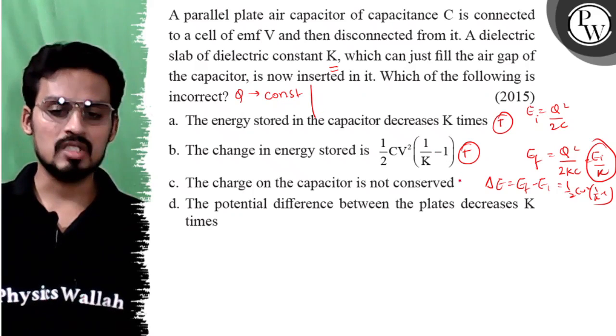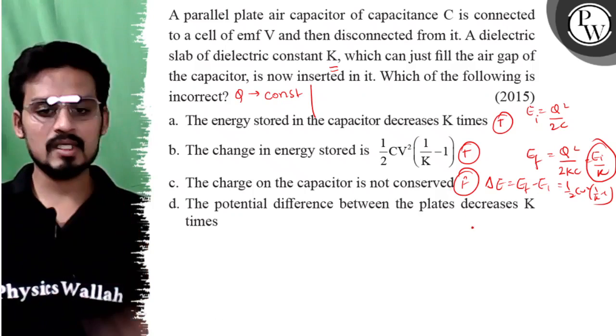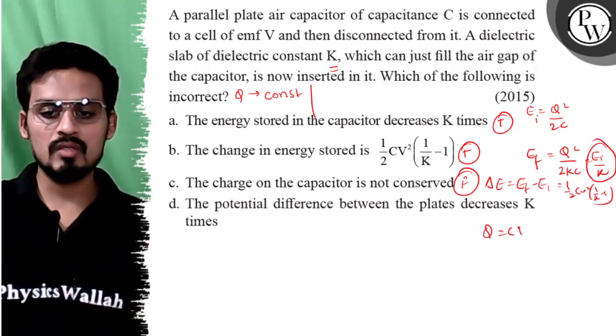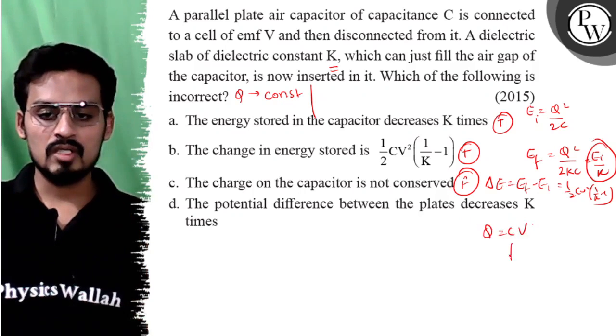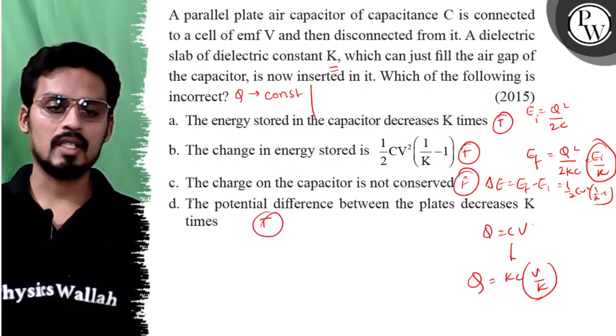The potential difference between the plates decreases K times. Potential difference Q is equal to CV. C value is equal to KC, so because we have Q to keep the same, so V to keep the same, V by K. Hence this is also true.